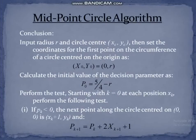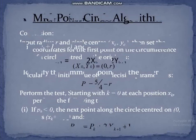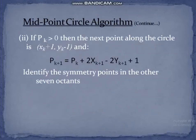To summarize the midpoint circle algorithm: we start from the coordinate (0, r), then calculate the initial decision parameter p₀ = 5/4 − r. We then determine the value of the decision parameter at each step. If the decision parameter is less than 0, the next point is (xₖ + 1, yₖ). If the decision parameter is greater than 0, the next point is (xₖ + 1, yₖ − 1).